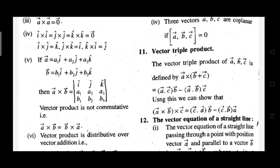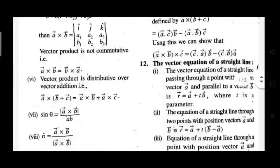Expanding with signs plus, minus, plus, you will get the cross product of two vectors A and B. Vector product is not commutative — that is, A cross B is not equal to B cross A.